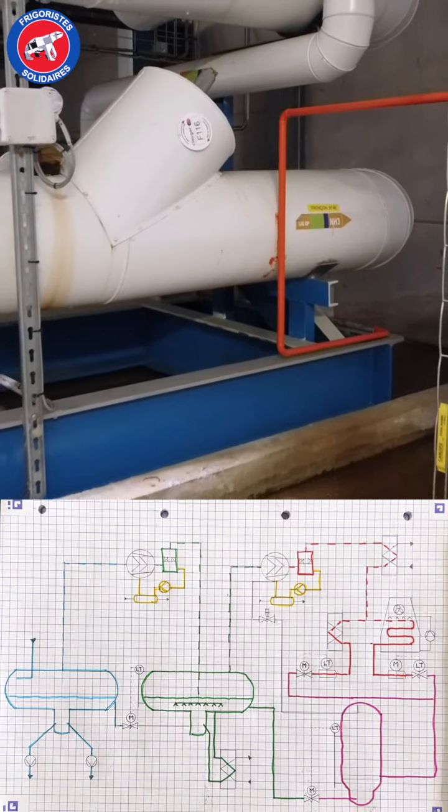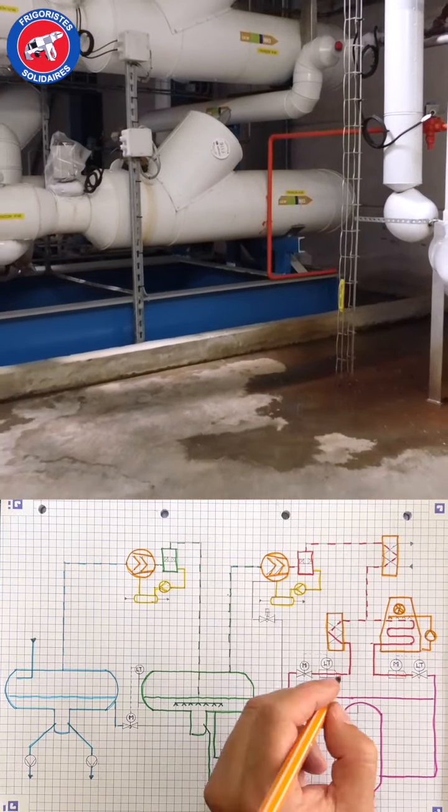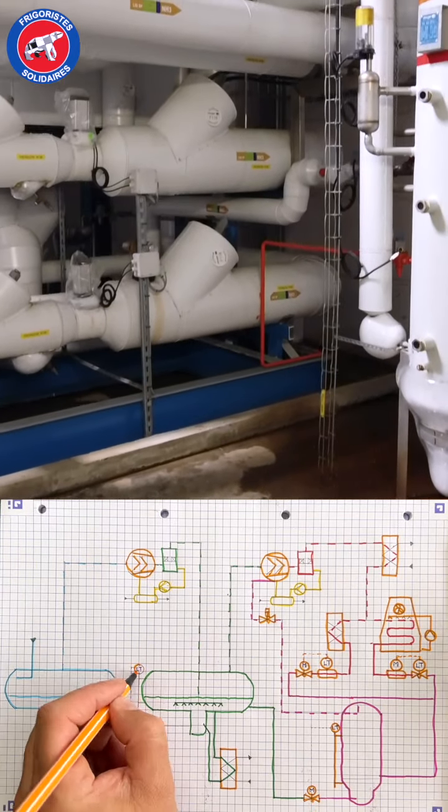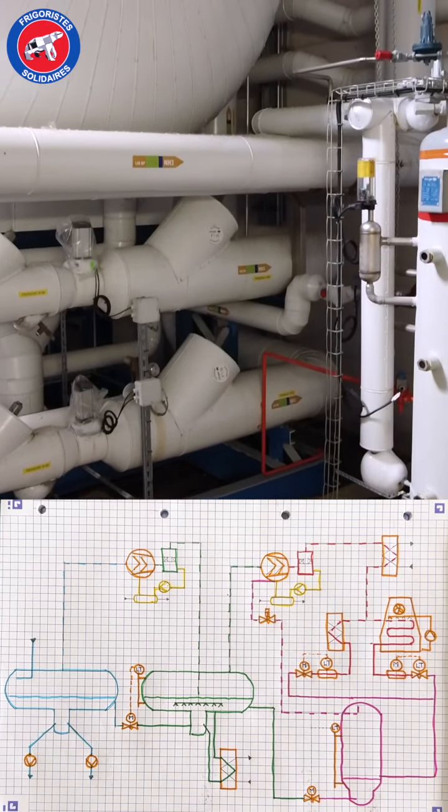The level of liquid in the medium pressure receiver is controlled by a level transmitter which drives the expansion valve feeding the low pressure part at minus 42 degrees C.